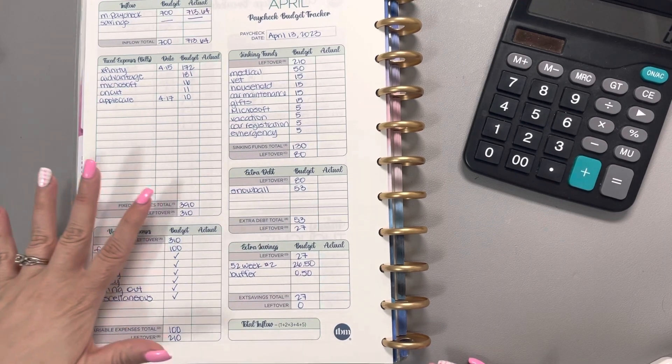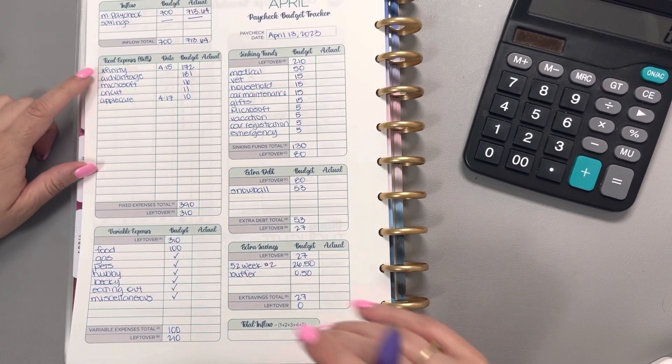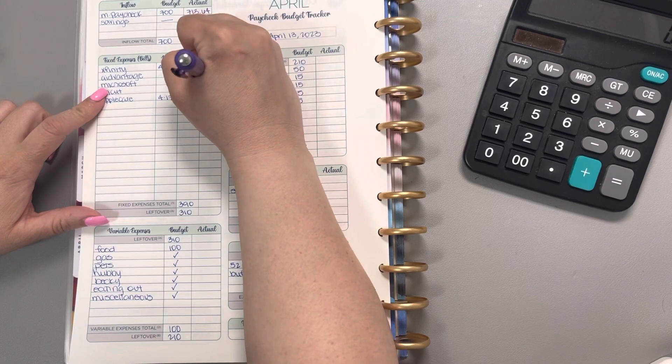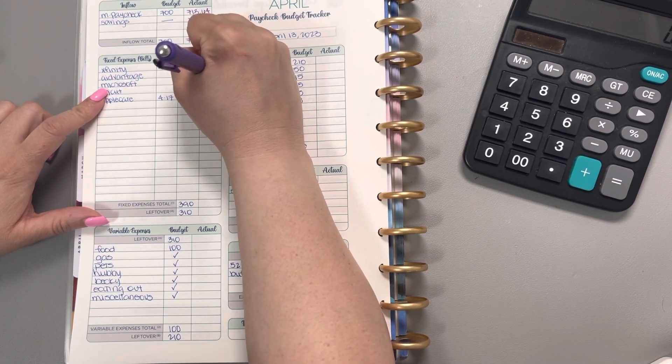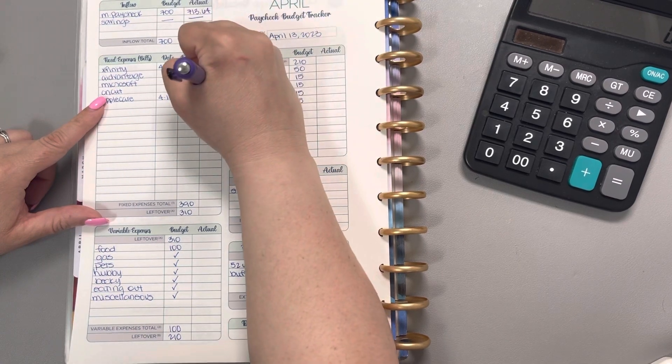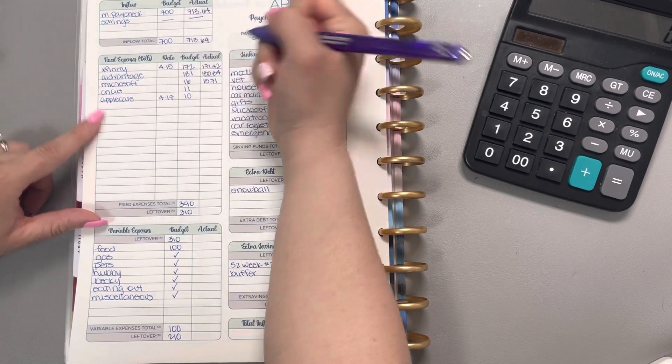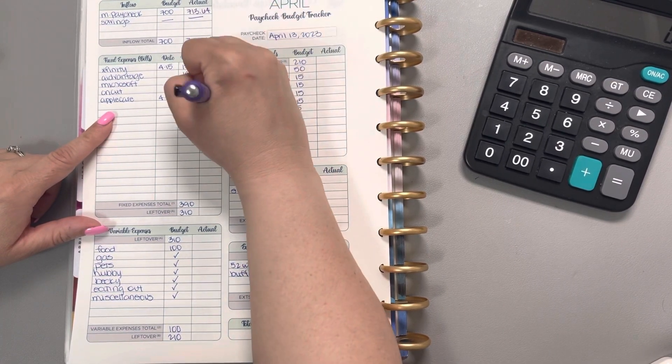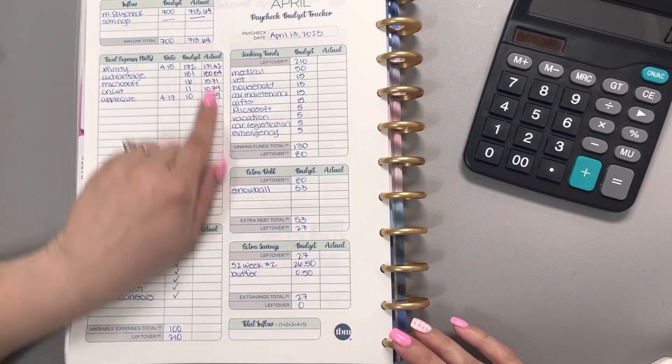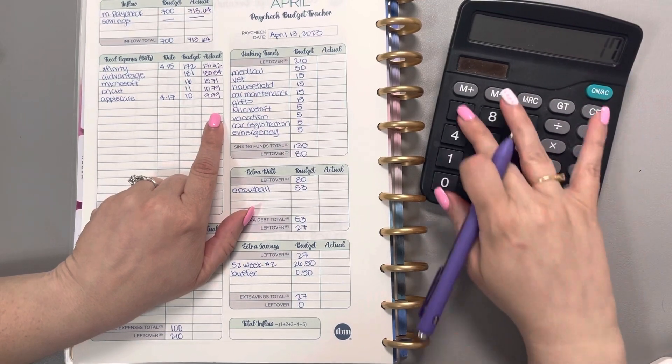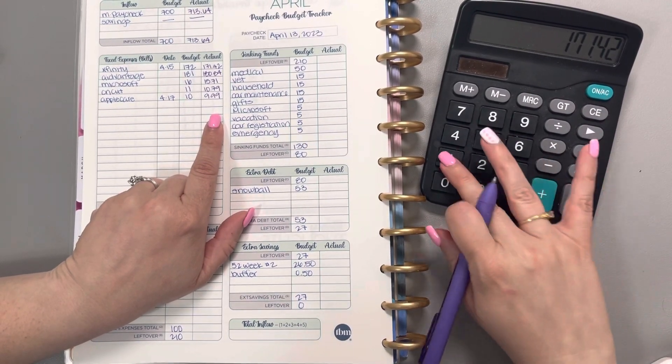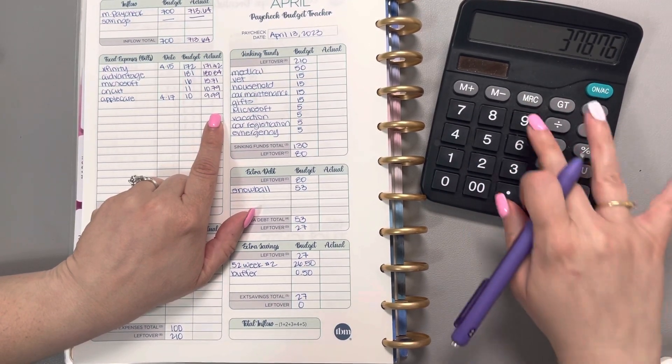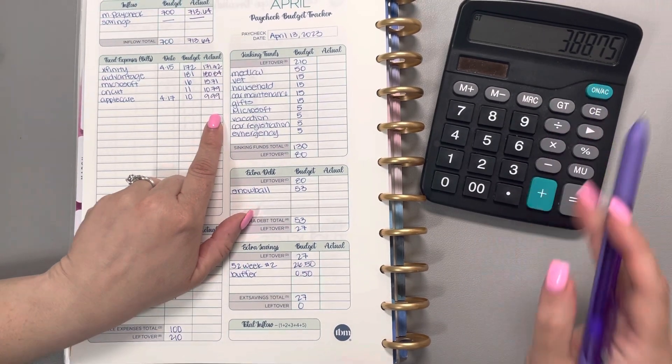Our bills came in: Xfinity was $171.42, Advantage $180.84, Microsoft $15.71, Cricket $10.79, and AppleCare $9.99. When I add those five values together, that gives us a total of $388.75.